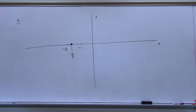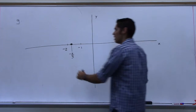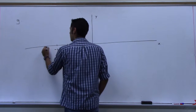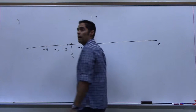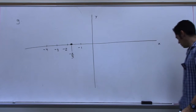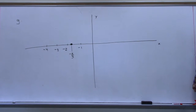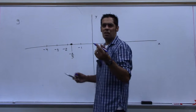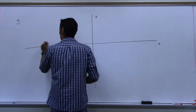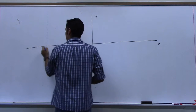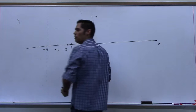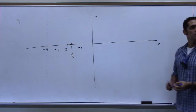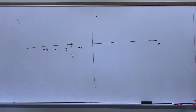The next piece of information was the vertical asymptotes at negative four and six. I come over to negative four and draw a vertical line all the way. I'm drawing it in a different color because this is not part of the graph — it's just to help me draw. Then I also draw one at six.